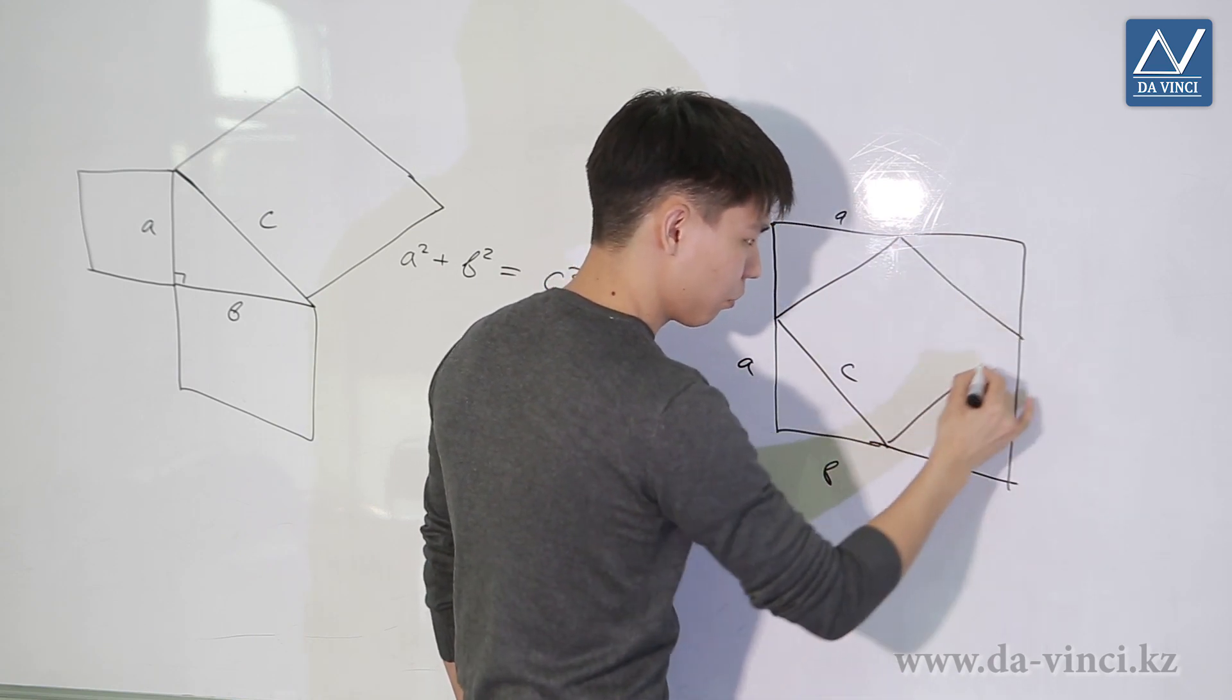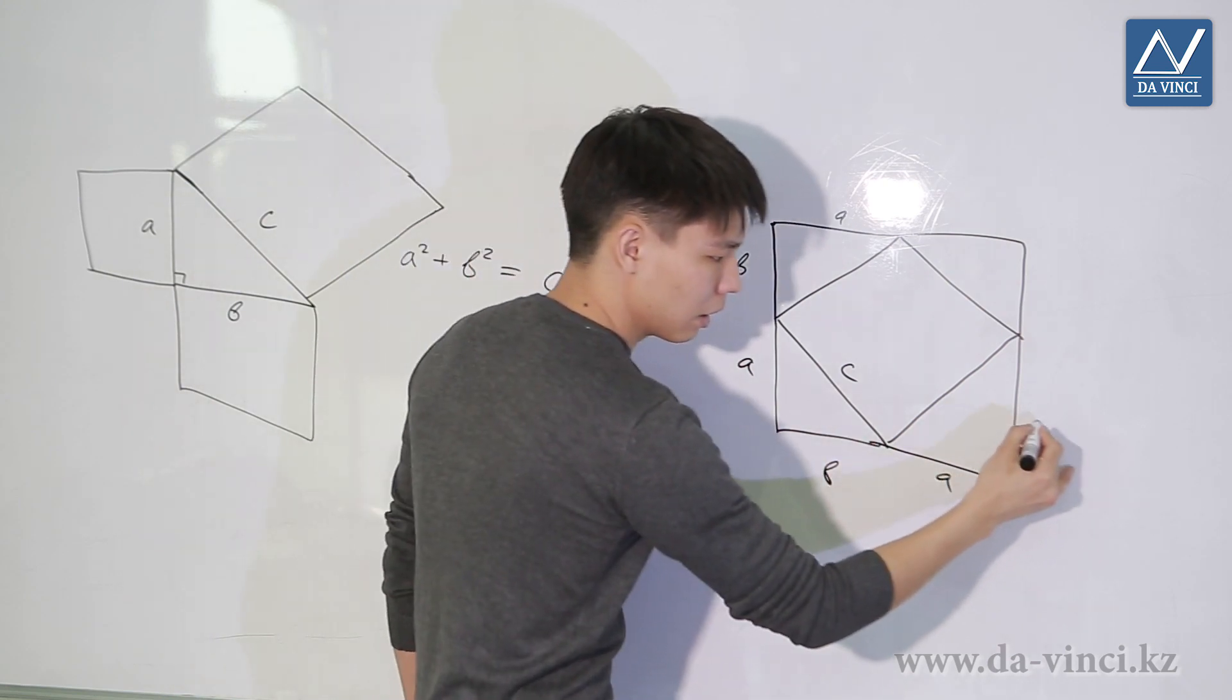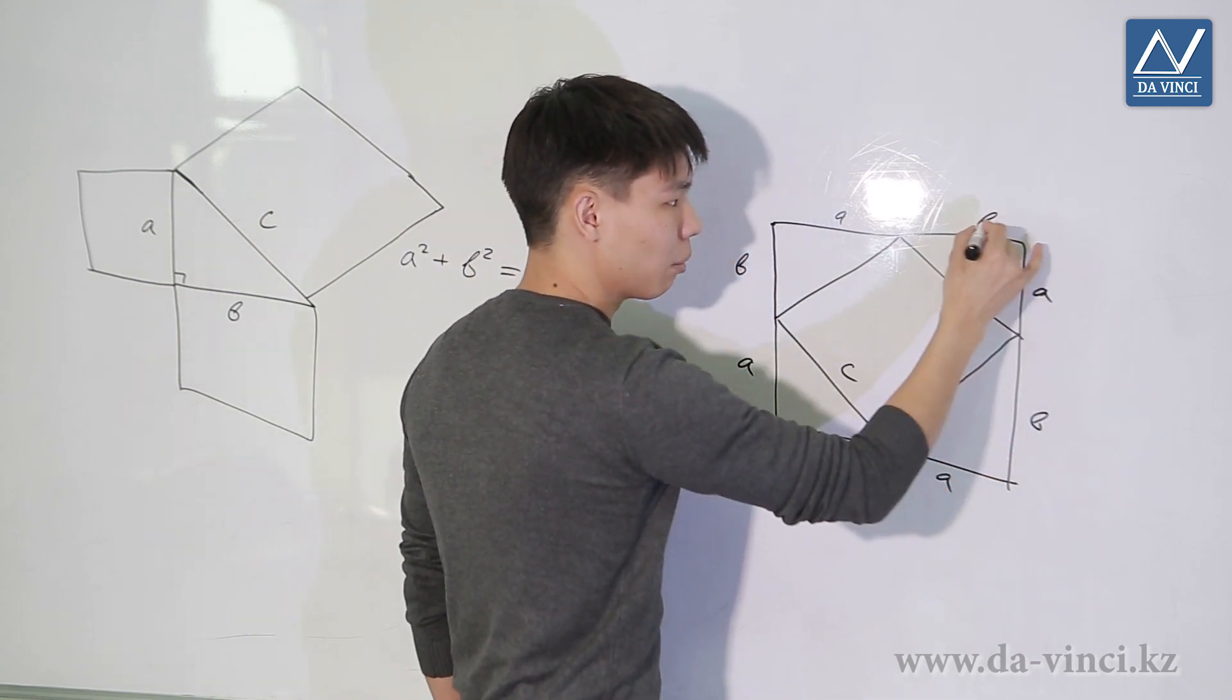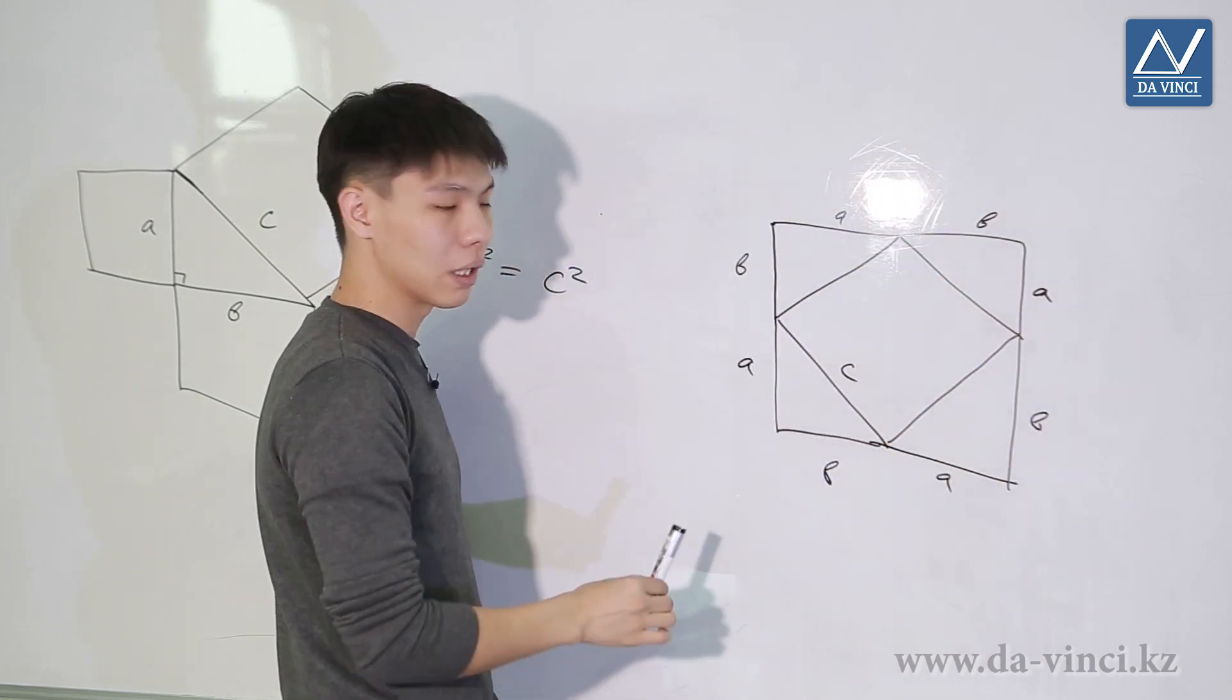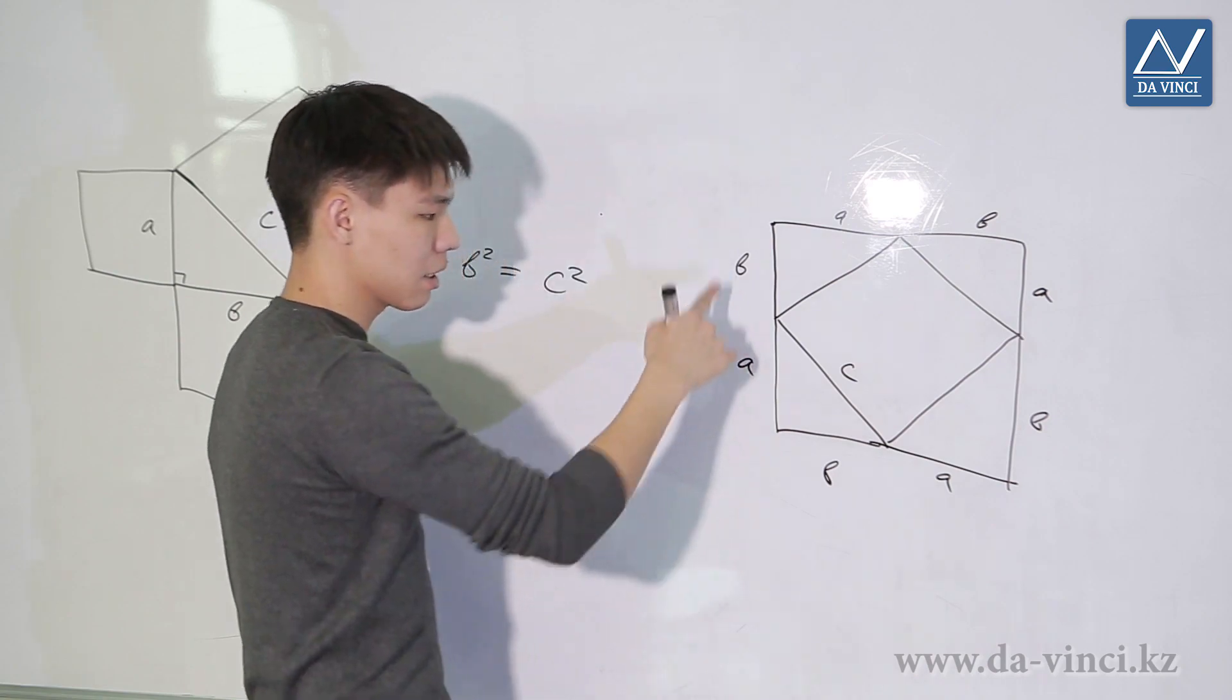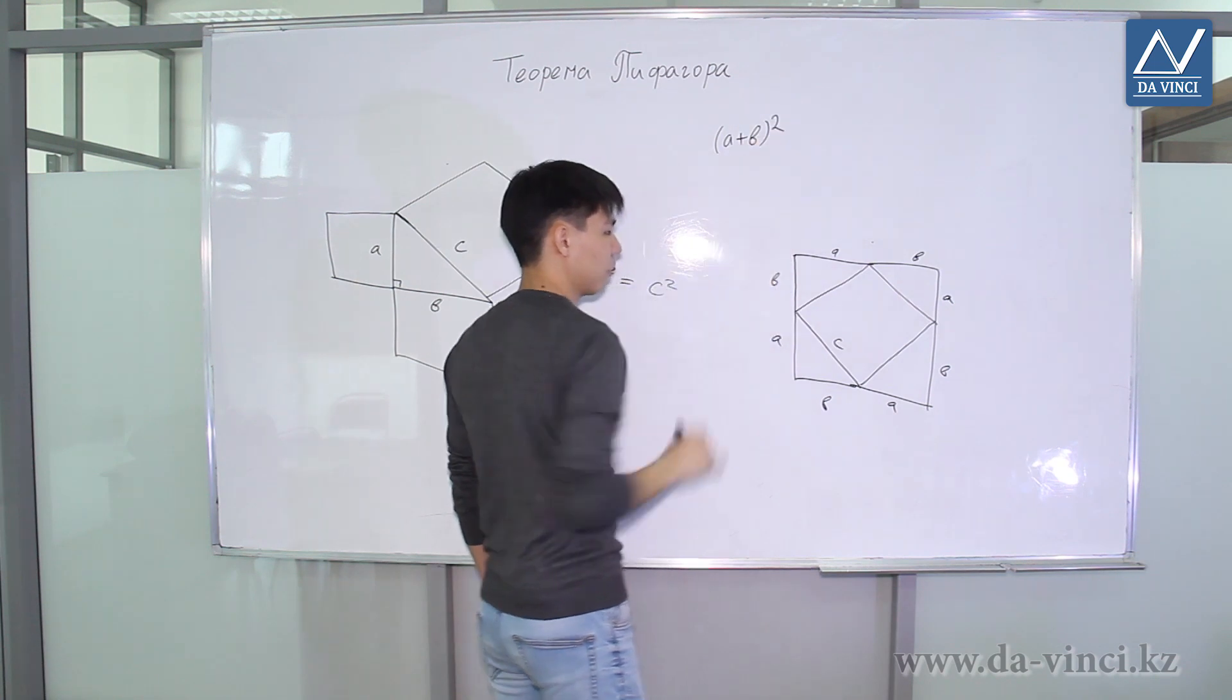We will get four identical triangles. Here is leg A, here is B, this is leg A, this is B, this is leg A, this is B. So we got a square with side A plus B. We know that the area of a square with side A plus B is the square of its side, that is A plus B squared.